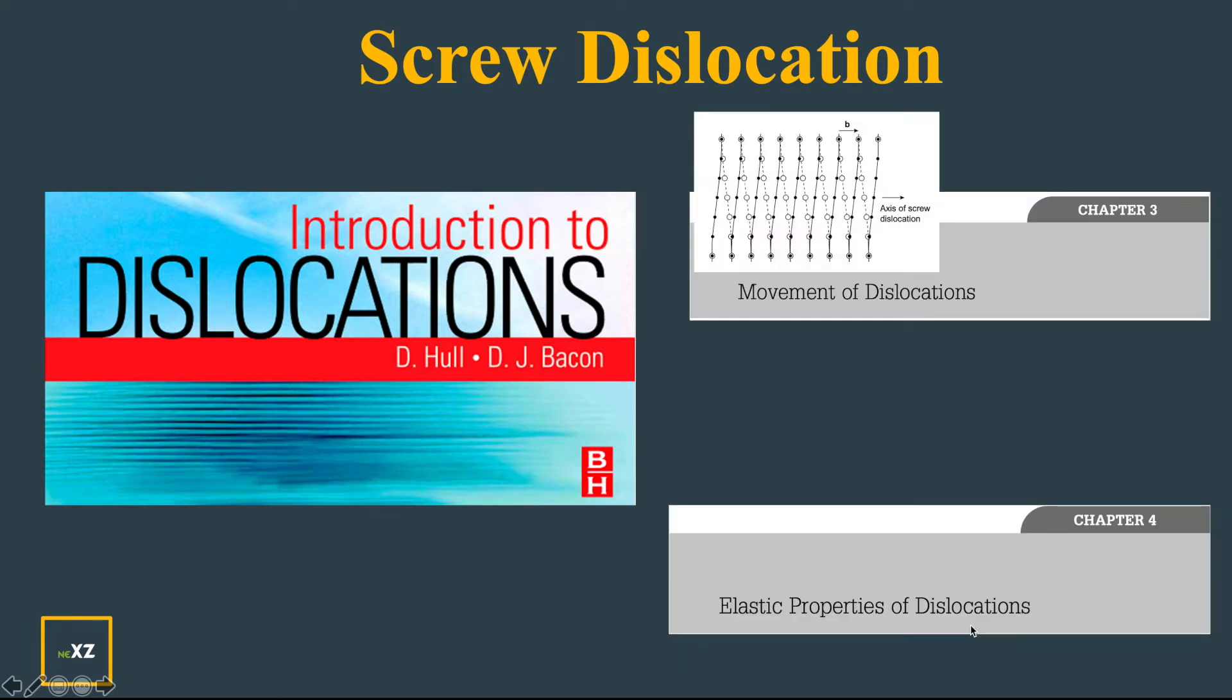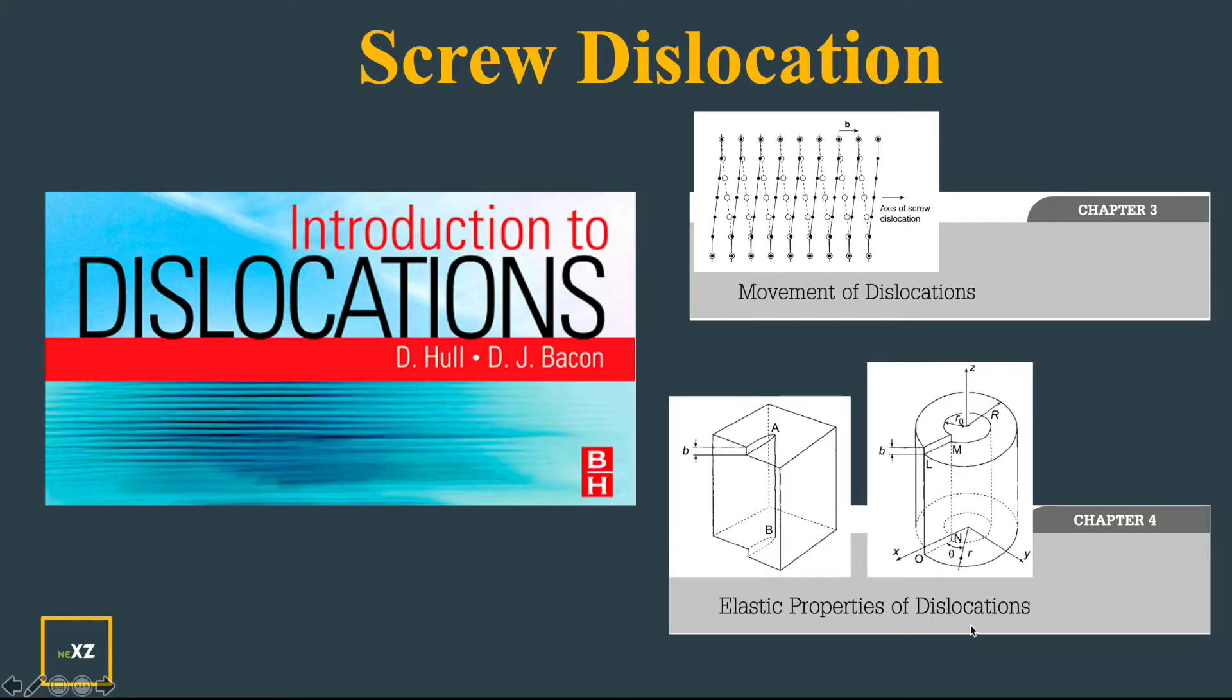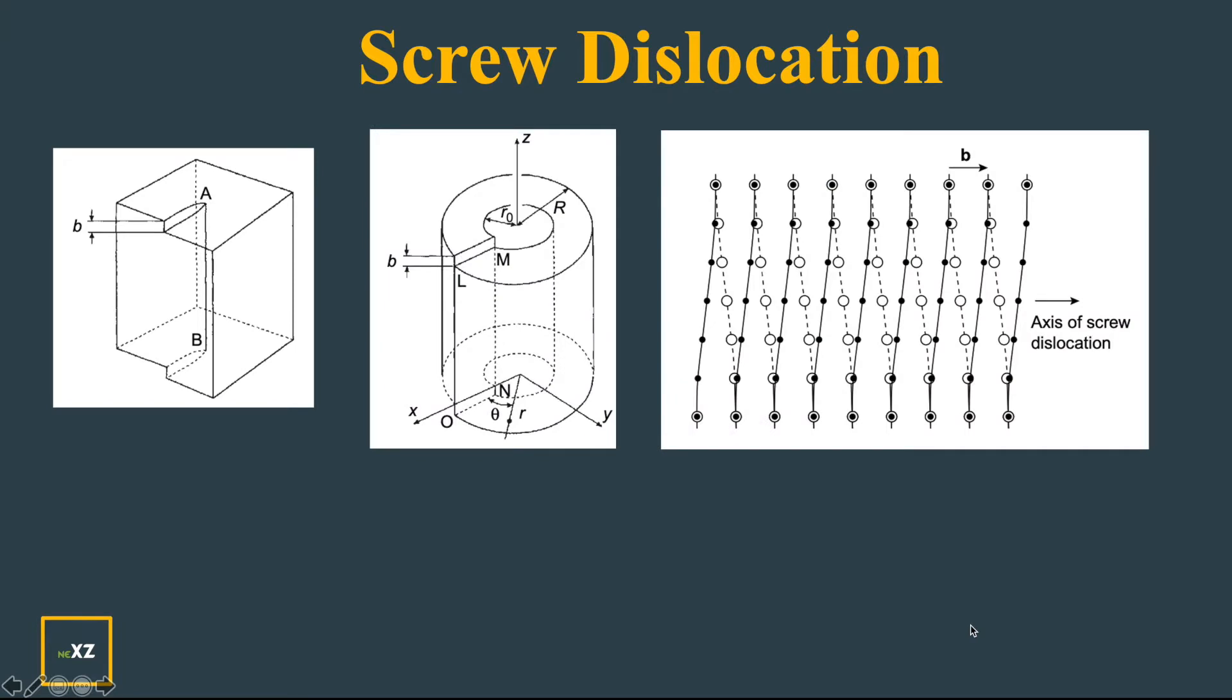One, to understand how a screw dislocation looks like - it's like a screw of some nut and bolt to use. And in Chapter 4, you can see based on elasticity theory how you should displace the atoms so that you can get a screw dislocation.